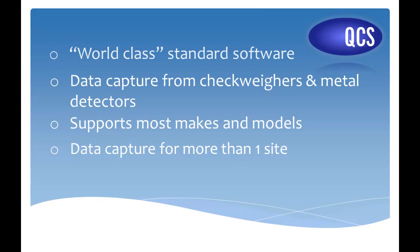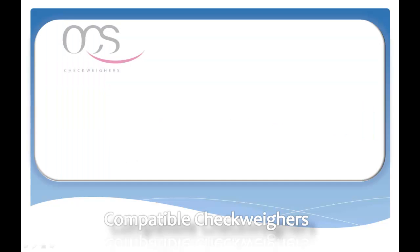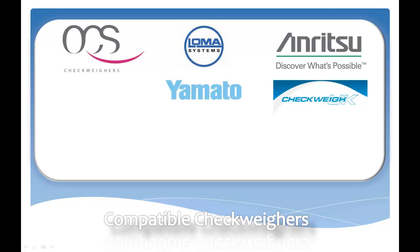PlantStats line monitor is a complete data capture system for checkweighers and metal detectors that is widely used in the food, drink and beverage industry. PlantStats supports most makes and models of checkweigher and can combine the data to produce seamless reports across multiple sites, with over a thousand checkweighers connected worldwide from most of the leading manufacturers.